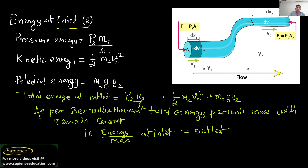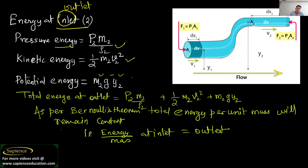Total energy at outlet equals pressure energy P2·m2/rho2, plus kinetic energy half·m2·v2², plus potential energy m2·g·y2. So total energy at outlet is: P2·m2/rho2 + half·m2·v2² + m2·g·y2.